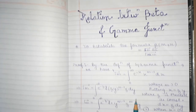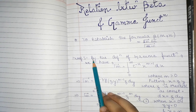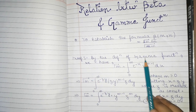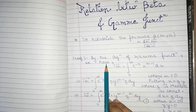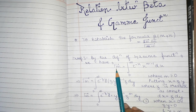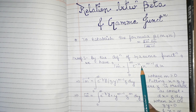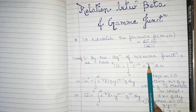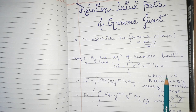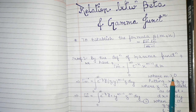So let's derive it. First of all, we know that by the definition of the Gamma function, Gamma(m) is equal to the integral from 0 to infinity of e^(-x) times x^(m-1) dx, where m is greater than 0.